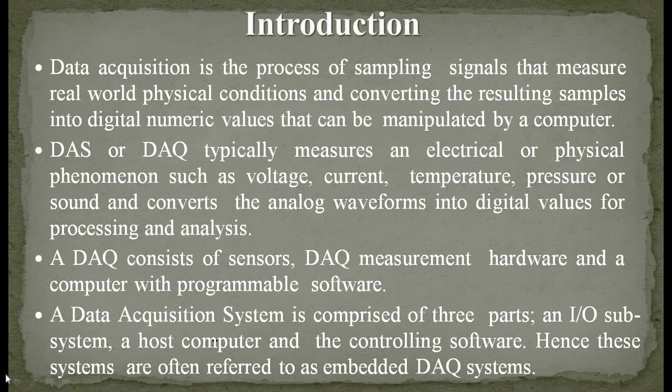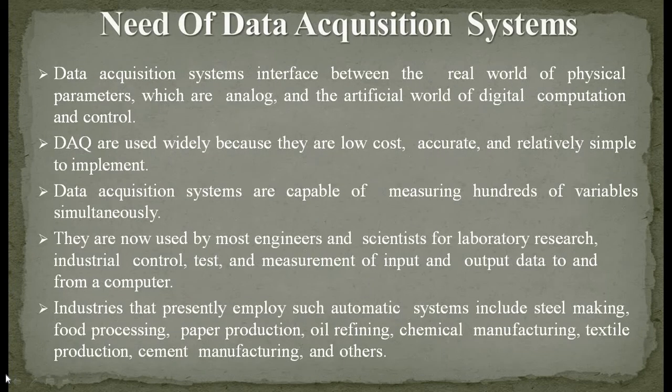A DAS or DAQ typically measures electrical or physical phenomena such as voltage, current, temperature, pressure, or sound and converts analog waveforms into digital values for processing and analysis. A DAQ consists of sensors, DAQ measurement hardware, and a computer with programmable software. The data acquisition system is comprised of three parts: an input-output subsystem, a host computer, and the controlling software. Hence these systems are often referred to as embedded data acquisition systems.